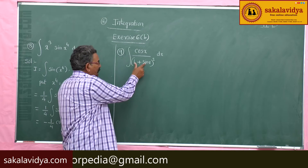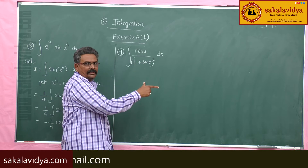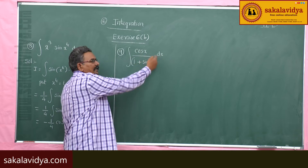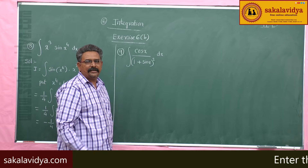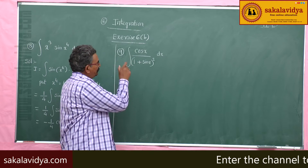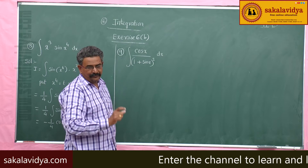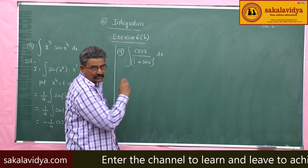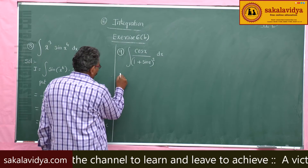So, if you put 1 plus sin x equal to t, you get integral of 1 by t square dt. The integral of 1 by t square dt is minus 1 by t. So, the answer becomes minus 1 by (1 plus sin x). Let us now do the problem formally.